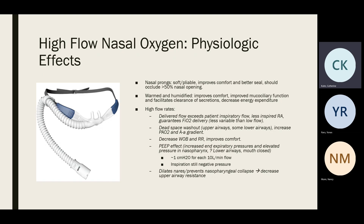Studies show that the humidification, warmth, and flow rates are what help most with oxygen delivery. The flow rates do a lot: patients in severe respiratory stress may need up to 120 liters per minute inspiratory flow, but if a patient needs 40 liters per minute you can deliver that and more. This guarantees no washout of oxygen — all inspired air will be at the set FiO2 — so you don't have the variable FiO2 seen with other delivery methods.